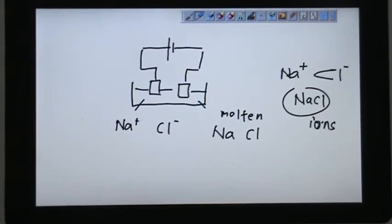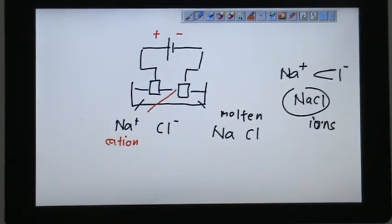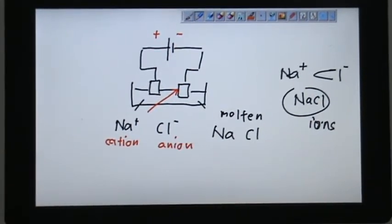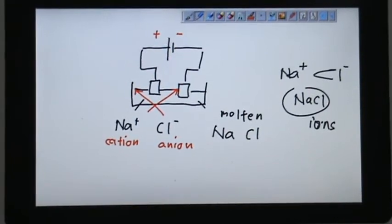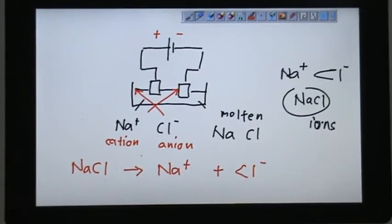And after being separated, they could go different ways according to the polarity. Here, we have positive, negative. The Na+, the cation, will be attracted to this side. Chlorine, Cl-, anion will be attracted to the positive side. So we say that this NaCl is broken down into their component. It shows that it can be separated.